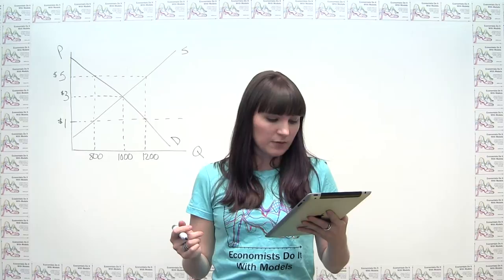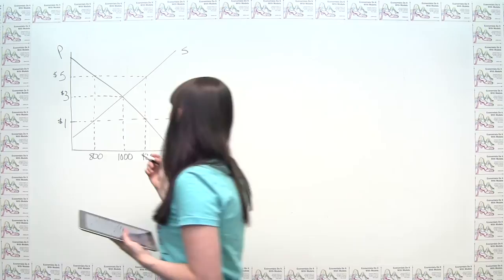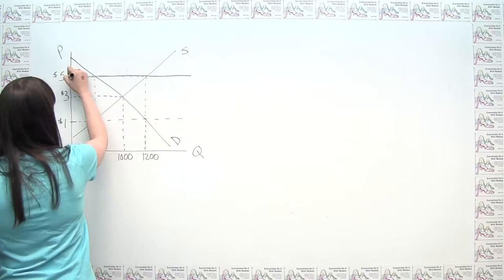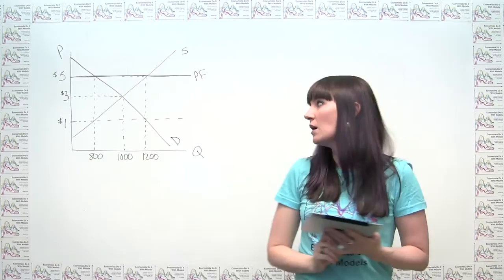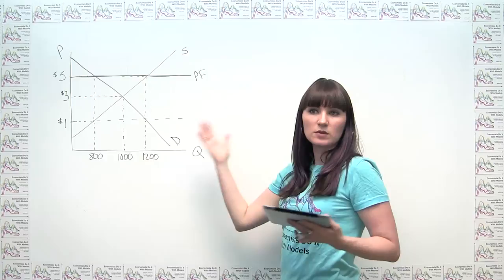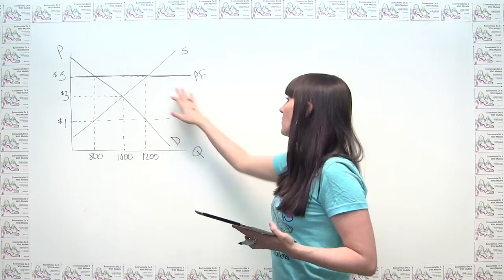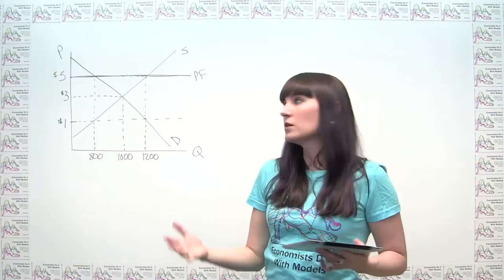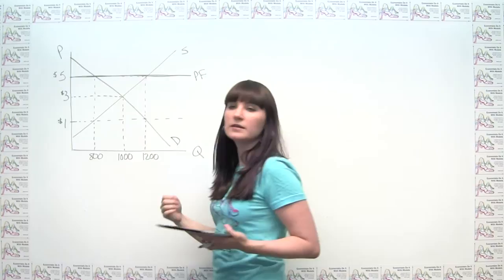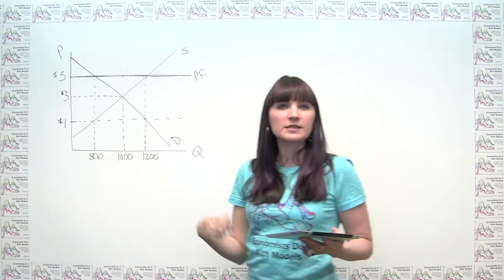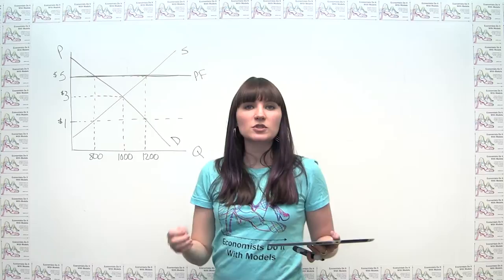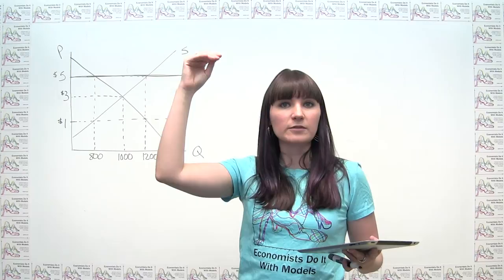Part A says: if the government sets a price floor of $5 per bushel, how many bushels of corn are produced? We're putting a price floor at that level — call it PF. There are a number of ways to implement a price floor. The government can put it in place and let producers deal with the surplus, or the government can maintain the price floor by agreeing to buy up all the surplus. If the government offers to buy as much as producers produce at $5, they have no incentive to sell to anyone else below $5. So that simple offer keeps the price at that level.